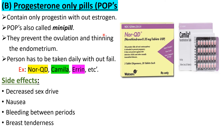Next, progesterone-only pills (POPs). As the name indicates, this type of pill contains only Progesterone — the presence of Estrogen is nil. POPs are also called mini pills. They prevent ovulation and cause thinning of the endometrium; when the endometrium becomes thin, the chances of implantation decrease. The person has to take these pills daily without fail. Examples of POPs include NorQD, Camilla, and Errin. Each strip contains 28 tablets.